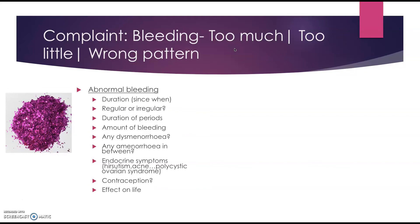You want to know to what extent this abnormal bleeding is impacting on a woman's life. For example, if she's bleeding so heavily that she's soiling her clothes at work and isolating herself, not going out because it's too embarrassing, or she doesn't want to have intercourse because she's bleeding so heavily — that could have a significant impact on her relationship. So you want to know how this is impacting on her life.